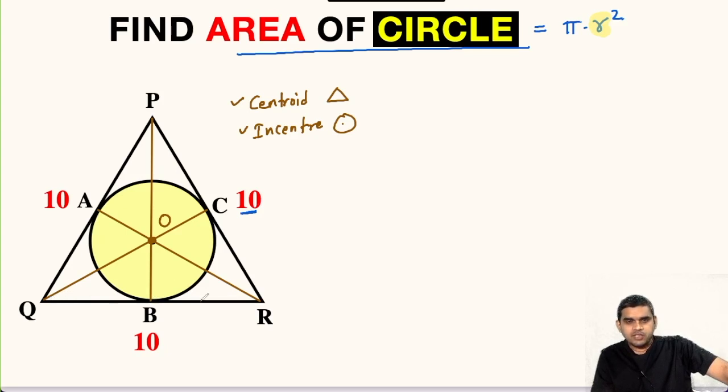Now we see that QB is tangent to this circle. O is the center of the circle. B is the point of contact. So OB will be perpendicular to QR. We know a theorem. Let us recall it.